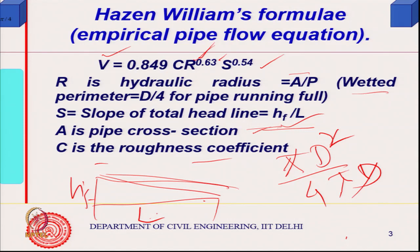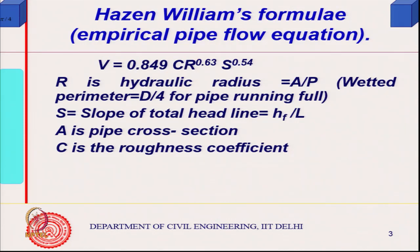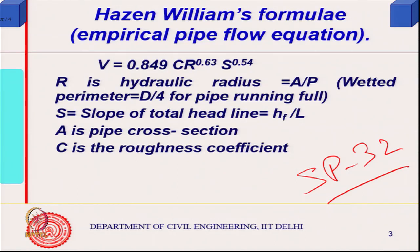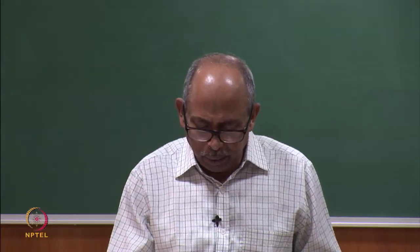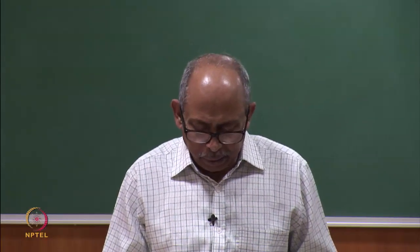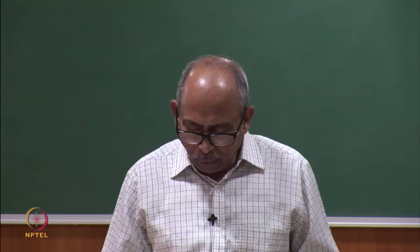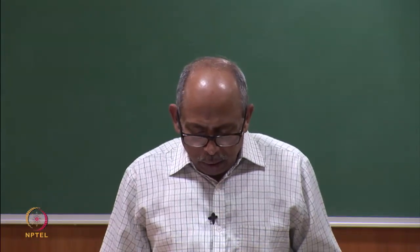That is the Hazen-Williams equation, which is what we use in water supply systems by and large. The National Building Code or SP 32 — which is available on the internet — gives this. SP 32 is a special publication of the Bureau of Indian Standards that provides charts based on this equation.